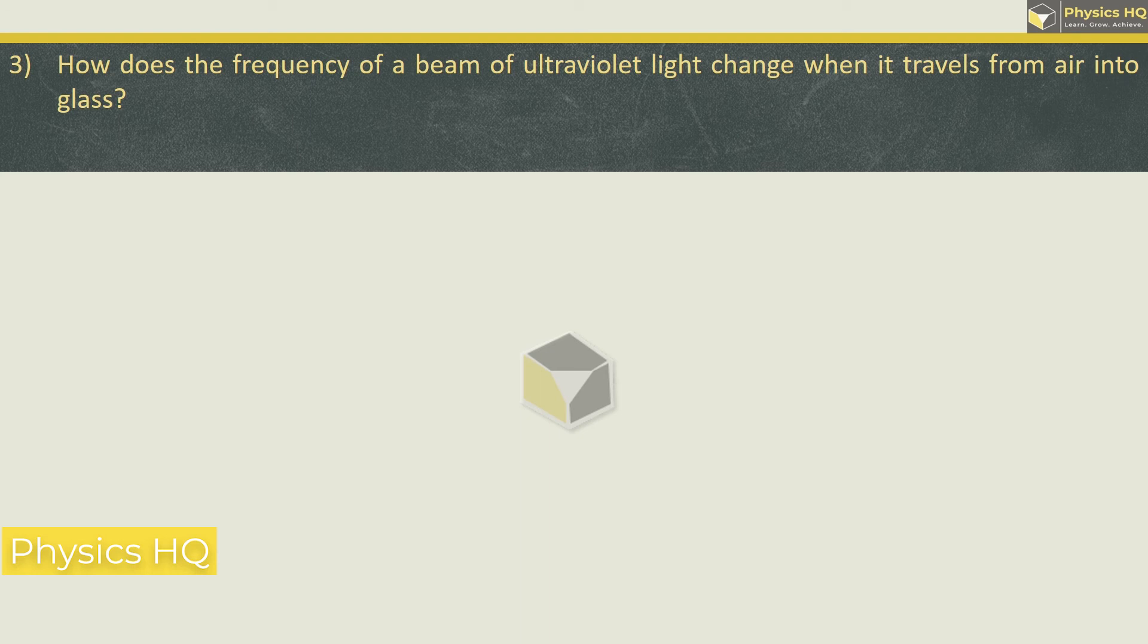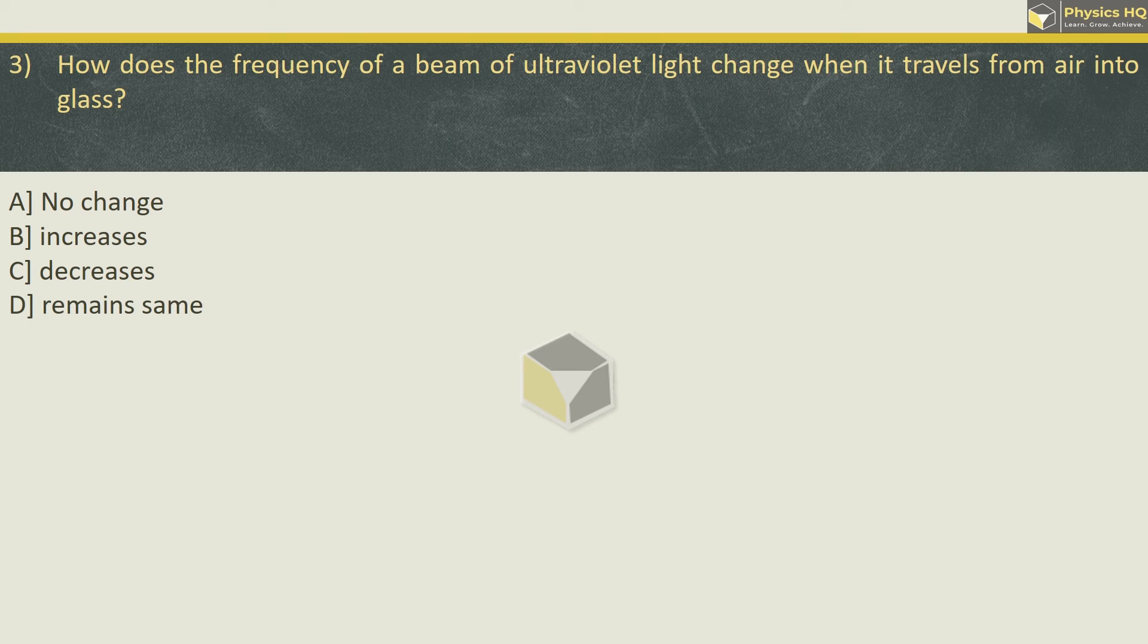Let us check out the next MCQ. How does the frequency of a beam of ultraviolet light change when it travels from air into the glass? No change, increase, decrease, remains same. Please remember this: any wave, if it passes from one medium to another, its frequency never changes.